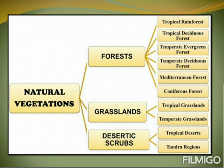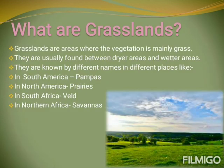That is Tropical Grasslands, Temperate Grasslands, Tropical Deserts, and Tundra Regions. Grasslands are areas where the vegetation is mainly grasses. They are usually found between the drier areas and the wetter areas. They are known by different names in different places. In South America, we call it Pampas. In North America, we call it Prairies. In South Africa, we call it Veld. And in Northern Africa, we call it Savannas.